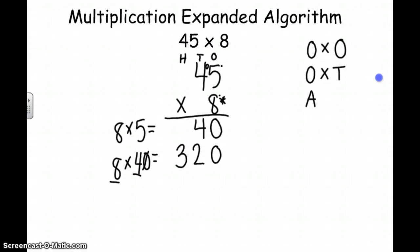And our third step is to add. We're going to add the two parts together. So when we add our ones place times our ones place plus ones place, 0 plus 0 is 0. 4 plus 2 is 6. 0 plus 3 is 3. So the product of 45 times 8 equals 360. And that's how you use the multiplication expanded algorithm.